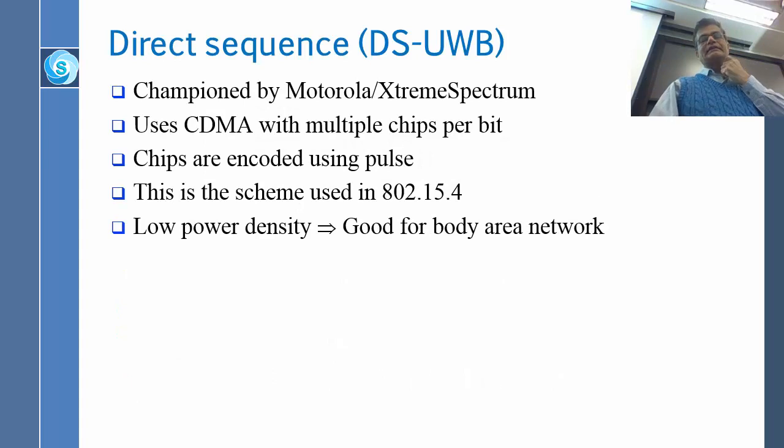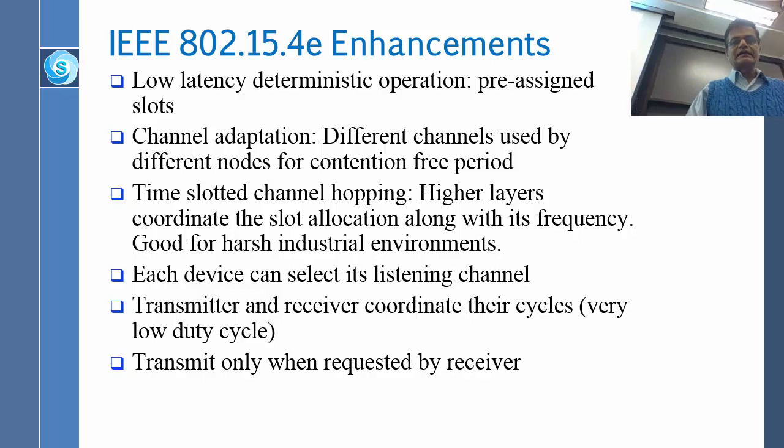UWB, actually, there was a lot of talk at that time, six years ago. But, now, people have found better ways of doing high speed. 60 gigahertz is there. So, some of this is gone away. 60 gigahertz is, right now, the kind of thing that we will use for gigabits and so on and so forth.